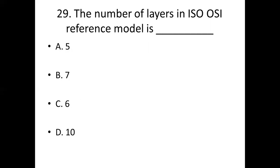Twenty-ninth bit: The number of layers in ISO OSI reference model is dash. Option A: 5. Option B: 7. Option C: 6. Option D: 10. Answer: Option B — 7.